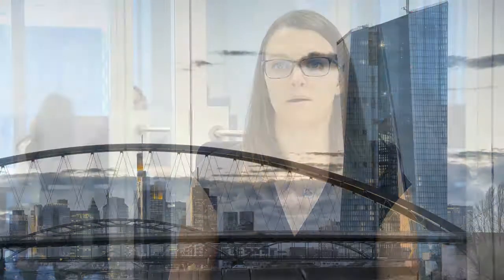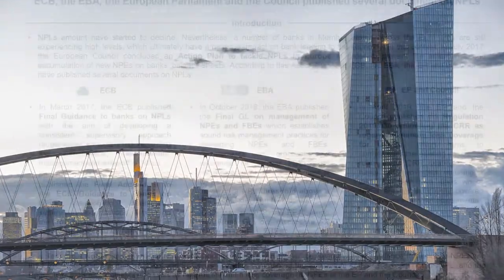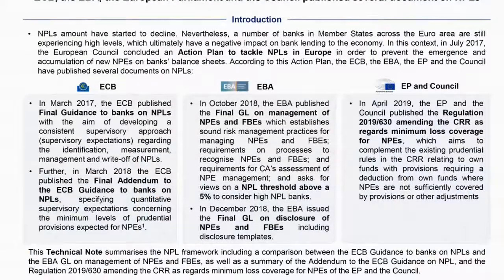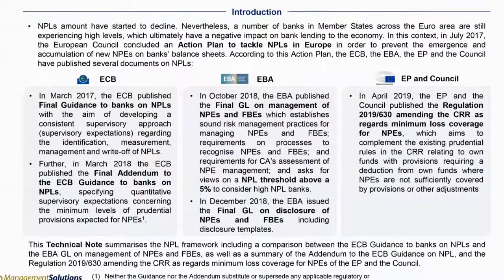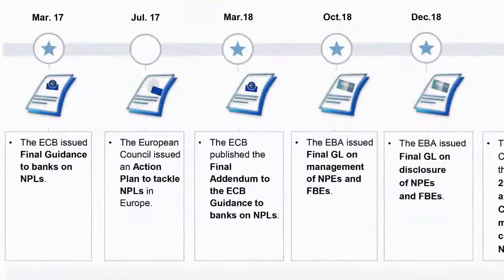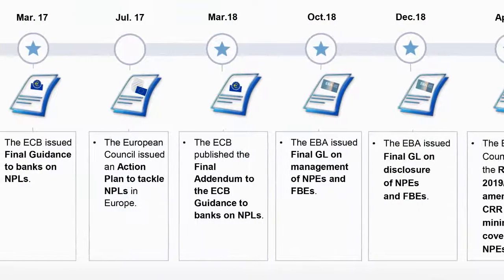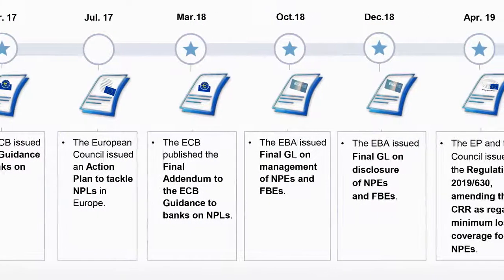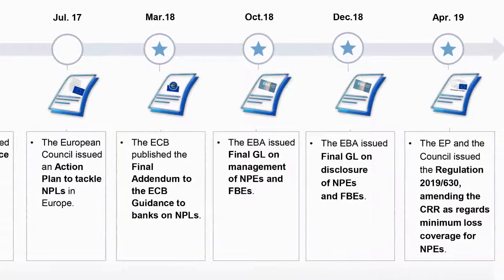Further, in March 2018, the ECB published the final addendum to the ECB guidance to banks on NPLs. In October 2018, the EBA published the final guidelines on management of NPEs and forbearance, and in 2018, the European Parliament and the Council published Regulation 2019-630, amending the CRR as regards minimum loss coverage for NPEs.